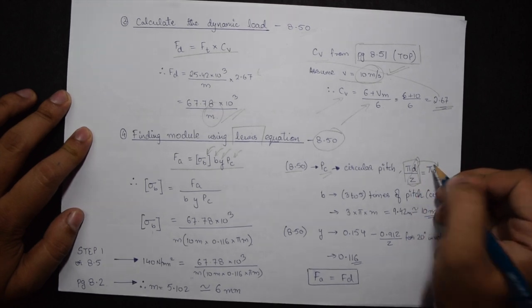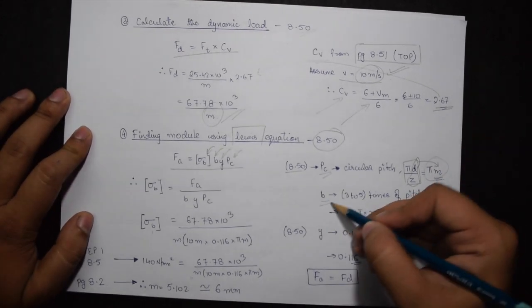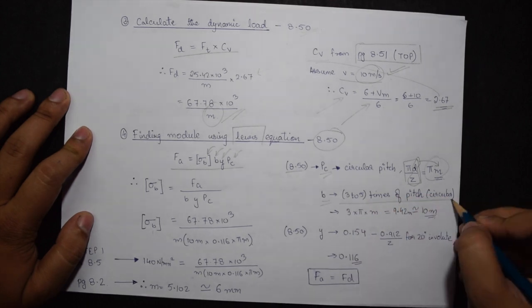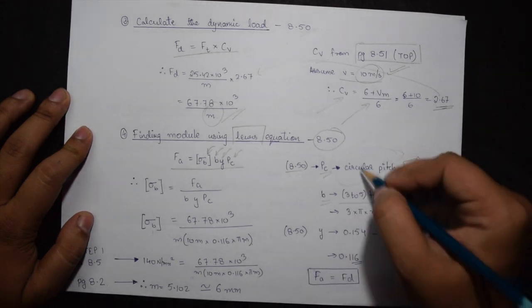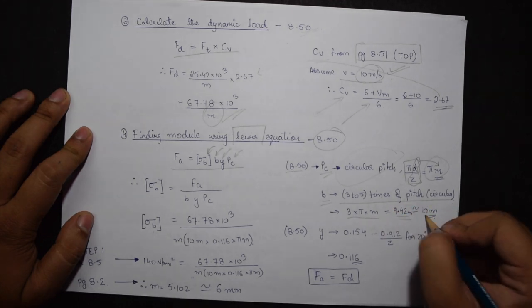B is the face width which is 3 to 5 times the pitch. So pitch we just calculated as pi M, multiplying it by 3, I get the value 9.42 M. I will be rounding off this value to 10M.